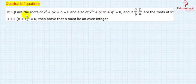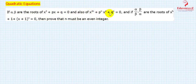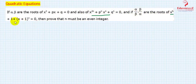The question is: if alpha and beta are the roots of x squared plus px plus q equal to 0, and also of x to the power 2n plus p to the power n times x to the power n plus q to the power n equal to 0, and if alpha by beta and beta by alpha are the roots of (x to the power n+1 plus x plus 1) to the power n equal to 0, then prove that n must be an even integer.